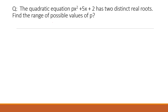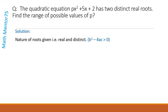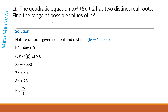Let's do one more example to further strengthen our concept. We are given the quadratic equation px squared plus 5x plus p, and this equation has two distinct real roots. We need to find the range of possible values of p. Since the roots are real and distinct, the discriminant must be greater than zero. We write down this inequality, plug in the values, and after solving we get the range of values of p for which this equation will have distinct real roots.